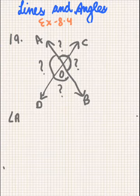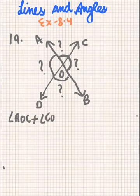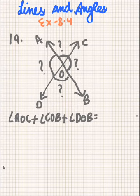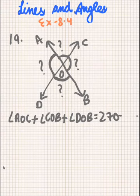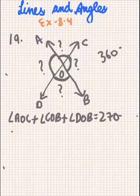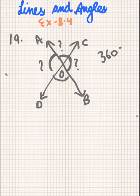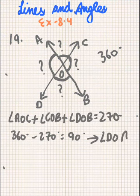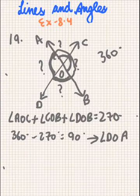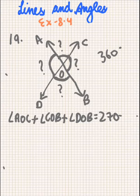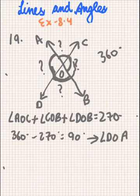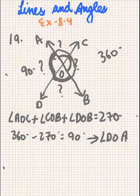We know that angle AOC plus angle COB plus angle DOB equals 270 degrees. We also know that the sum of all angles around a point equals 360 degrees. So we subtract: 360 minus 270 equals 90 degrees. This 90 degrees is the measure of angle DOA, because that was the only angle left. So angle DOA measures 90 degrees.